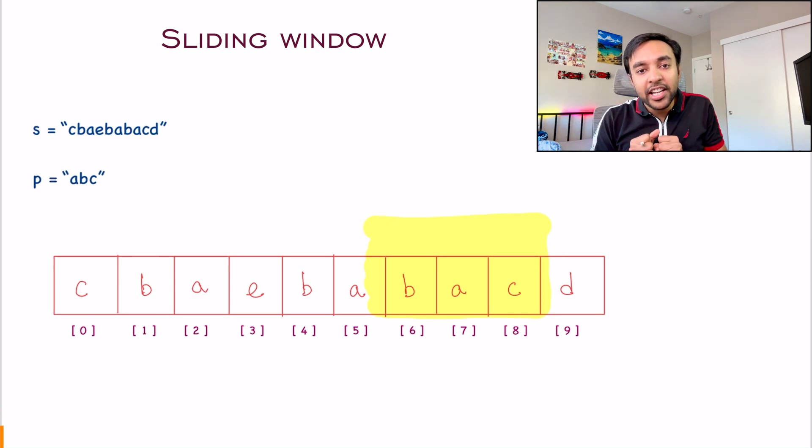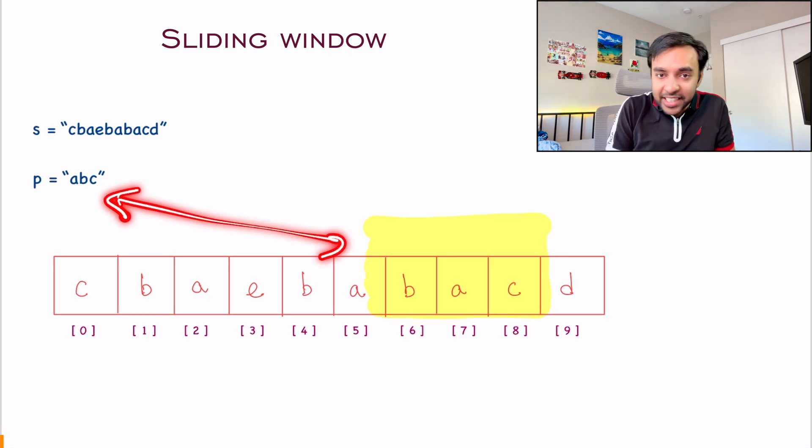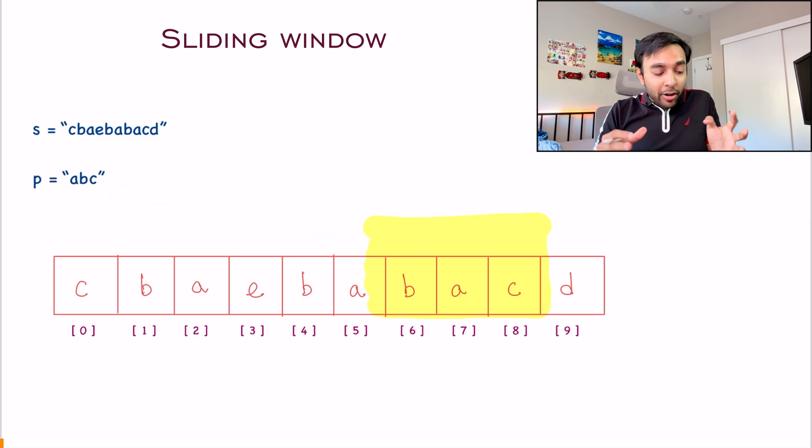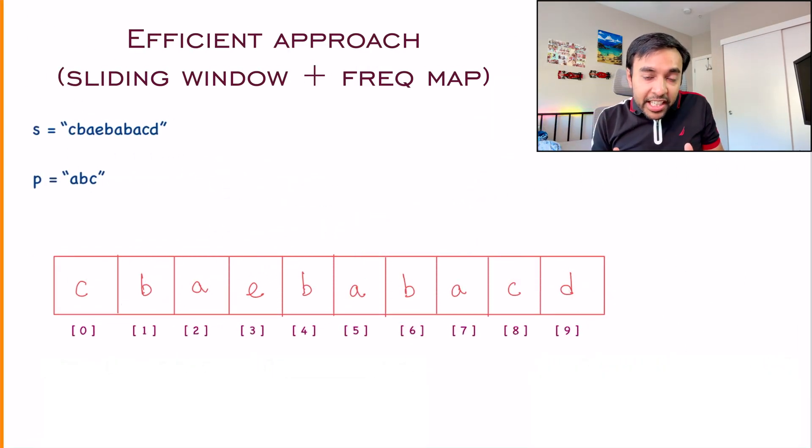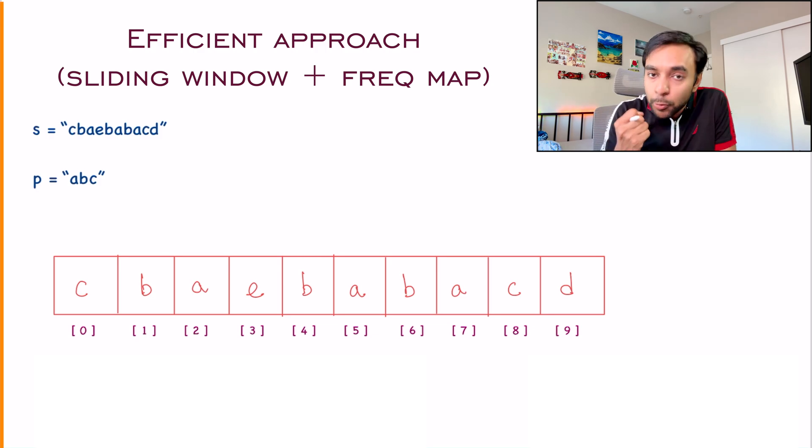Now the catch over here is how do you actually compare if these two strings are anagrams? Because at every iteration, this check is mandatory. This is happening at every time, right? So definitely we want an efficient solution around it. You cannot go around comparing all the strings again and again. This will end up wasting a lot of time. We need to be efficient over there.